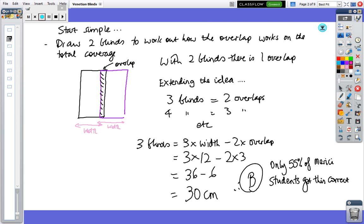So in slide number two, I've just drawn two blinds and I'm trying to work out how the overlap works. So I've got a black blind and a purple blind. And when I have the two blinds together, there is one overlap. So if two blinds have one overlap, then three blinds should have two overlaps, four blinds will have three overlaps, etc.